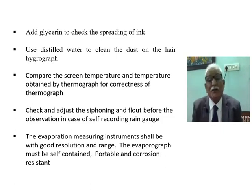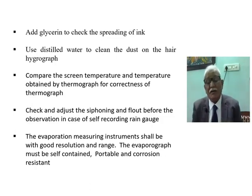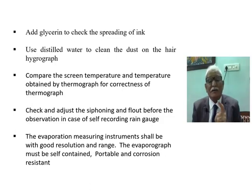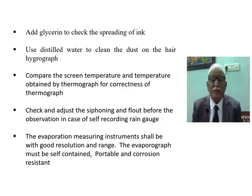Check and adjust the siphoning mechanism and the float before observation in case of the self-recording rain gauge. The self-recording rain gauge records the quantity and time of occurrence of rainfall, so the siphoning mechanism and float should always be properly maintained. Evaporation measurement instruments shall have good resolution and range.